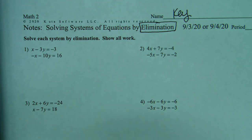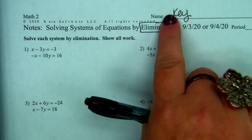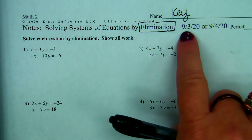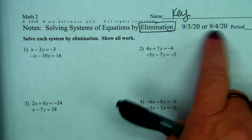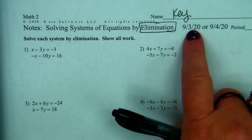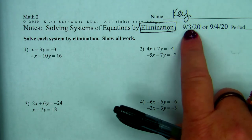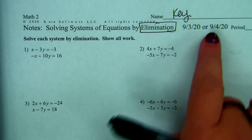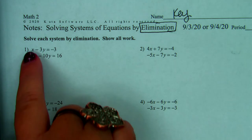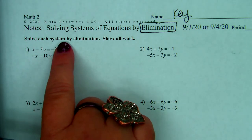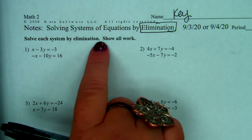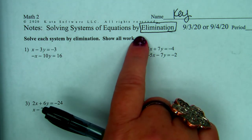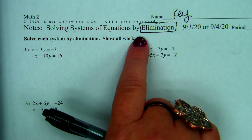Write your name, write what period you're in, circle what the date is if it's the third or the fourth, and solve each system by elimination showing all work. It's math, so you're always going to show all work.